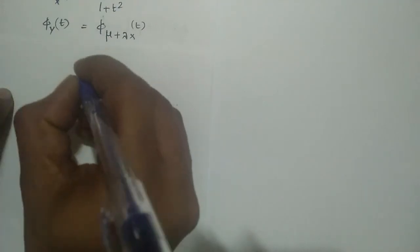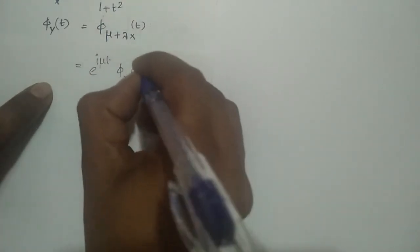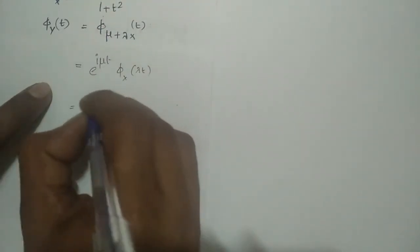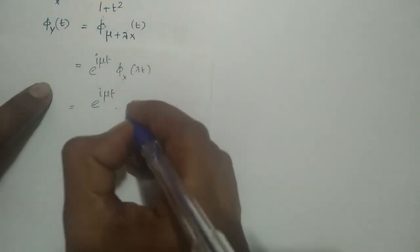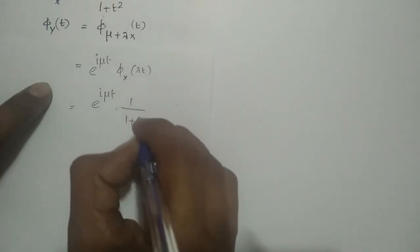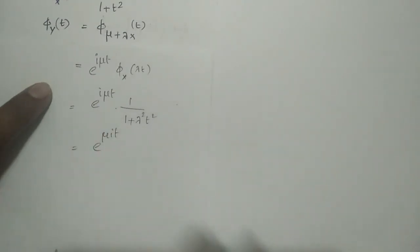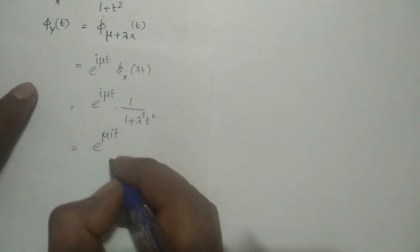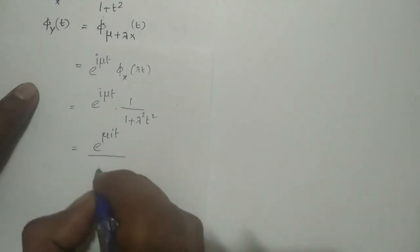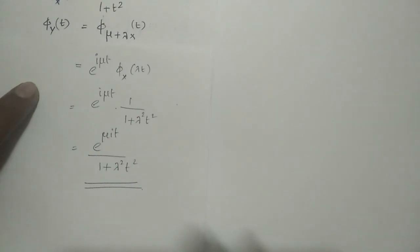By the properties of the characteristic function, φ_Y(t) = e^(iμt) · φ_X(λt). Since the characteristic function of the standard Laplace distribution is φ_X(t) = 1/(1 + t²), substituting λt gives φ_X(λt) = 1/(1 + λ²t²). Therefore, the characteristic function of the double exponential distribution is e^(iμt) / (1 + λ²t²). Thank you for watching.